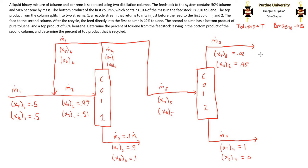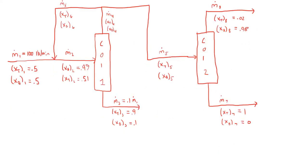You'll notice the problem statement didn't give us any mass flow rates. This happens fairly often, and whenever it does, it means you need to assume a mass flow basis. For assuming a basis, all you do is pick a certain stream in the process and assume its flow rate — usually something simple to work with. So I'm going to assume a feedstock mass flow rate M.1 of 100 pounds per minute. Now that we've assumed a basis, we have all the things we need to start solving the material balance. The first thing I'm going to do is solve for M.3, since we know M.3 is 10% of M.1.